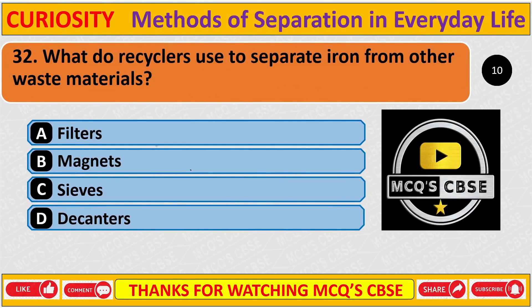Question: What do recyclers use to separate iron from other waste material? Correct answer is B: A magnet.